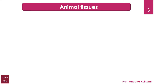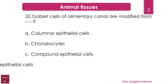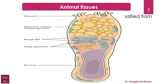The next question relates to the chapter Animal Tissues. The question is: goblet cells of the alimentary canal are modified from — options: A) columnar epithelial cells, B) chondrocytes, C) compound epithelial cells, D) squamous epithelial cells. The correct option is A — columnar epithelial cells.